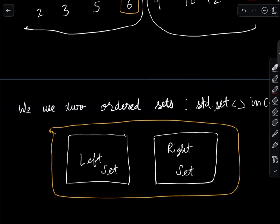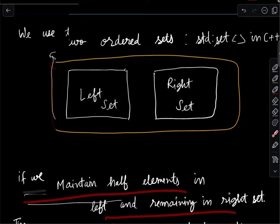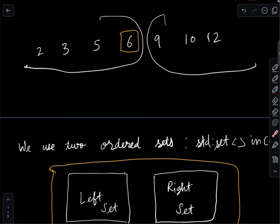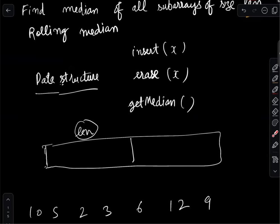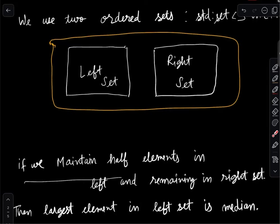The main goal is that half the elements should be in the left set and half in the right set. If we can maintain that invariant, then by this example, the largest element in the left set is the median. We just need to support the three functions: insert, erase, and get-median.